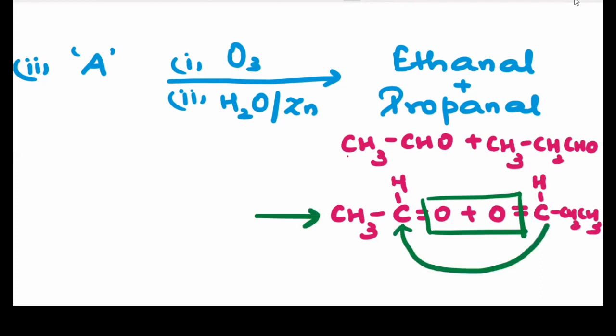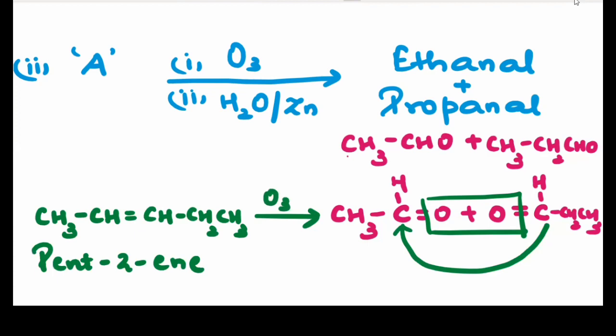So my reactant will be CH3CH double bond CH CH2 CH3, and the name of the structure A is - we have 1, 2, 3, 4, 5 carbons. The naming is pent-2-ene. So pent-2-ene on ozonolysis gives ethanol and propanol.